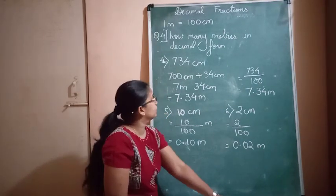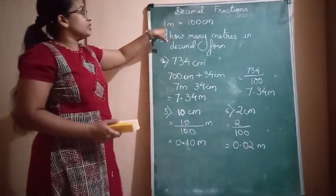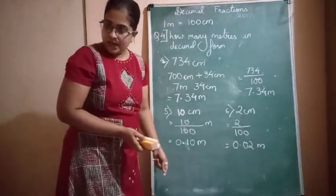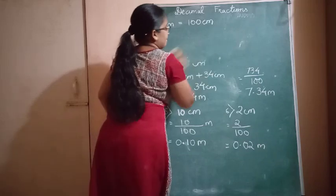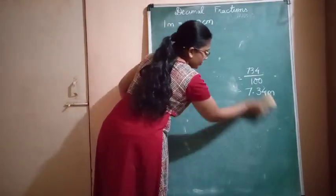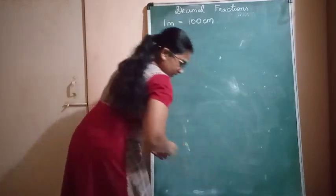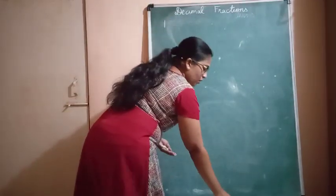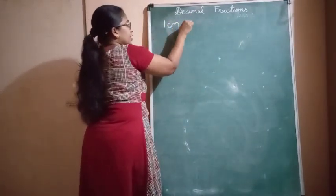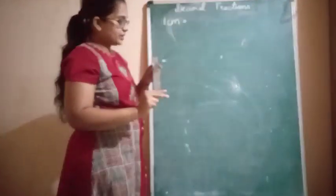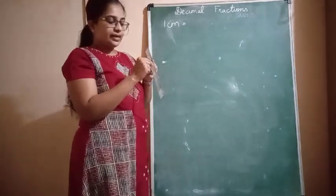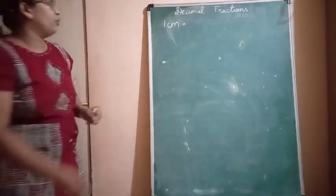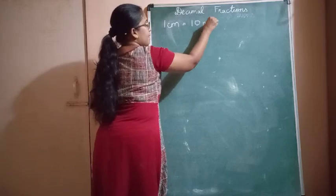That is how we do question number 4. We have now finished learning about the meter and centimeter relationship. Let us look at another relationship: the relationship between centimeters and millimeters. If you look closely at a ruler you will see that each centimeter is divided into 10 small parts. Each part is a millimeter. Therefore 1 centimeter is equal to 10 millimeters.